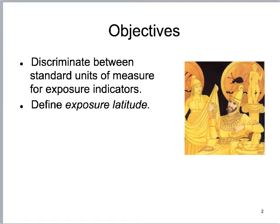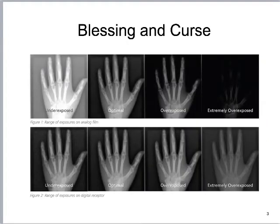A lot of that same thing holds true for us here in this country today. There's both a blessing and a curse to many parts of our lives — there's a blessing and a curse to the automobile. For us in digital imaging, there's a blessing and a curse to this system that we're using. That's what I want to talk about when we discuss these units of measure and exposure latitude.